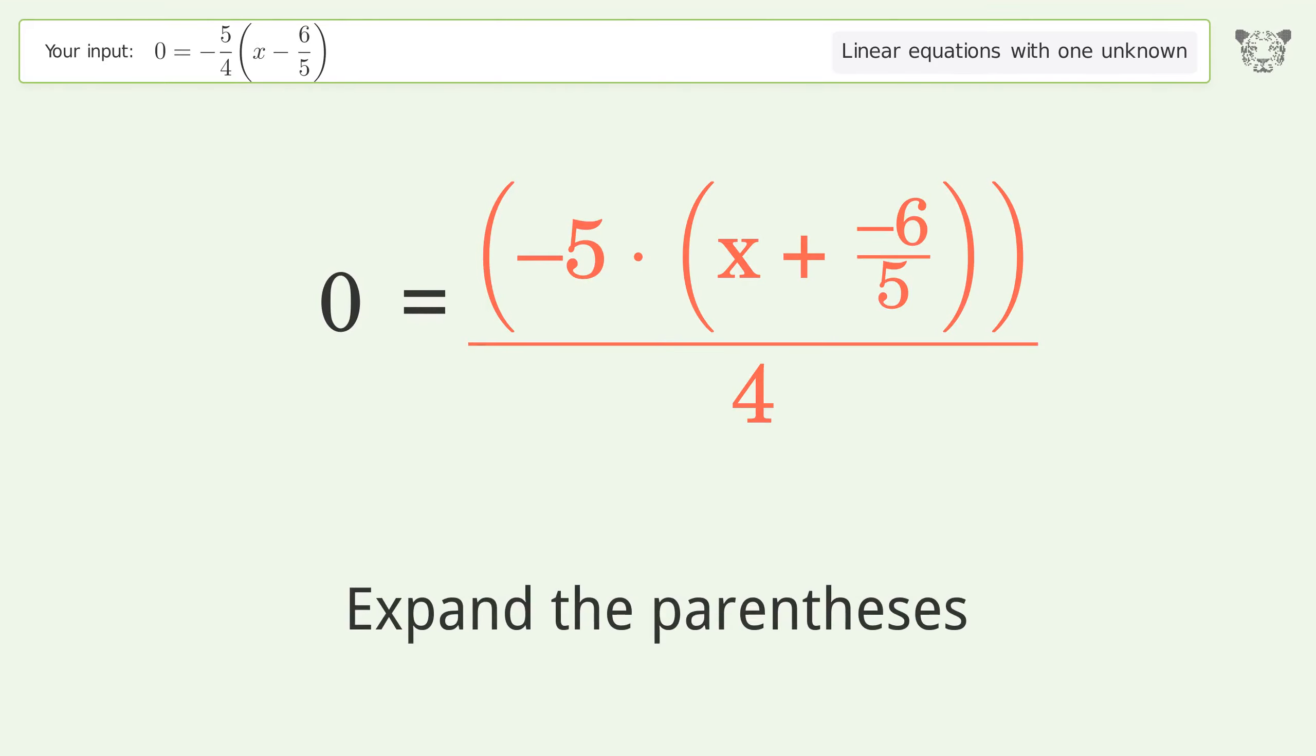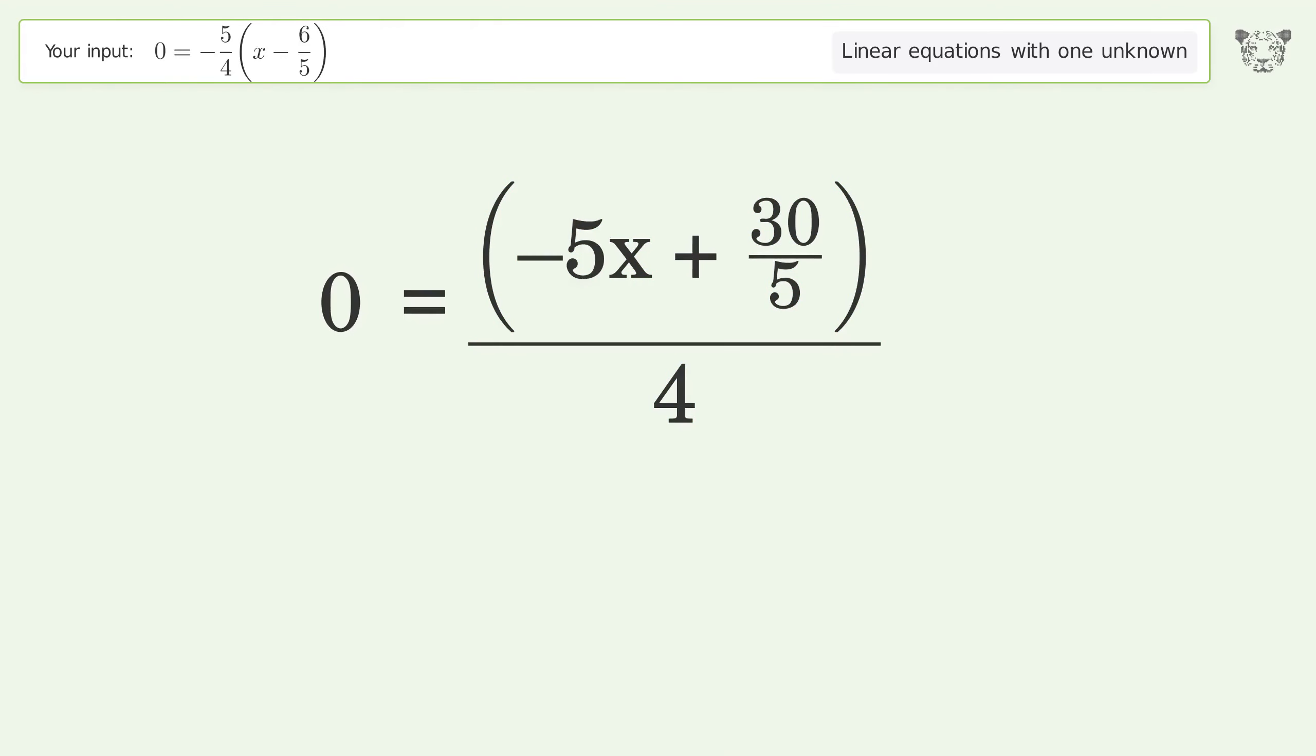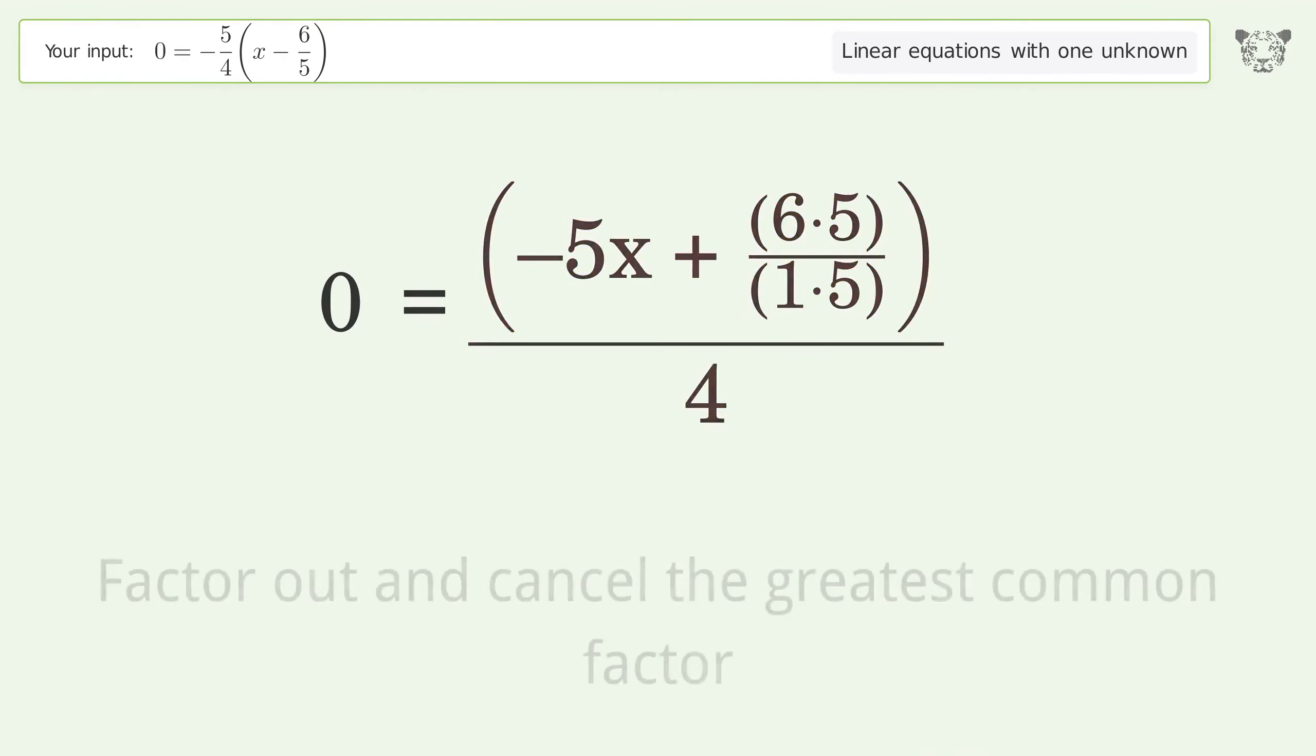Expand the parentheses. Simplify the arithmetic. Find the greatest common factor of the numerator and denominator. Factor out and cancel the greatest common factor.